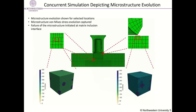Here we plot the Mises stress for two selected elements. One can see the stress accumulation around the inclusion-matrix interface region. This leads to damage initiation and subsequent failure of the RVE.